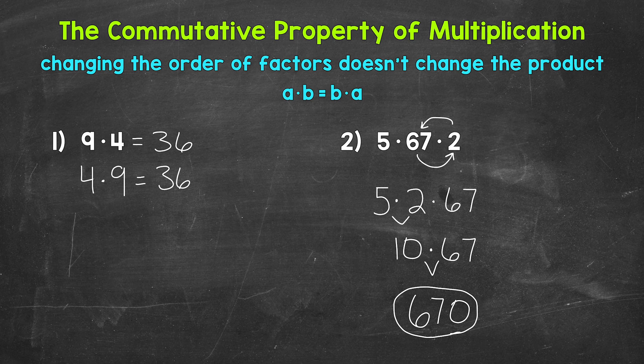Now are we able to start with 5 times 67 and work from left to right without using the commutative property? Yes. Let's actually do that off to the side to show that we will still get 670. So let me rewrite this problem off to the side: 5 times 67 times 2. Now we can work from left to right, starting with 5 times 67.